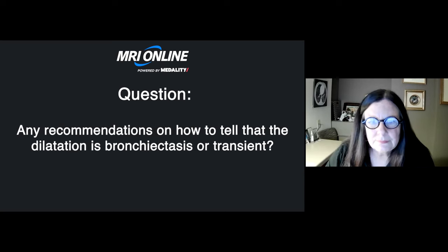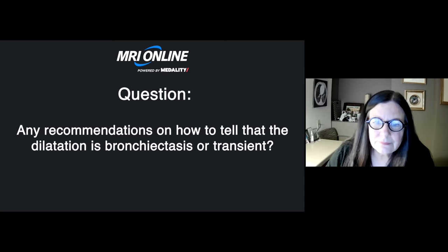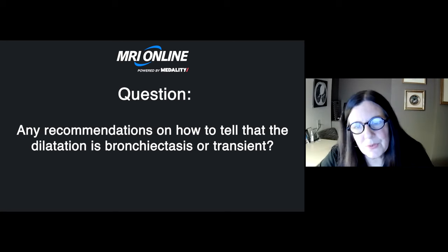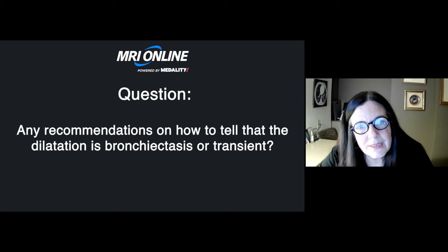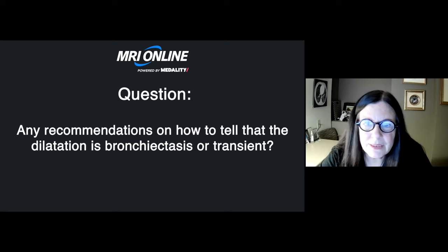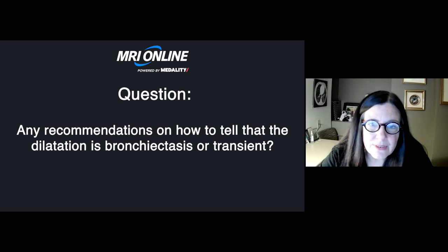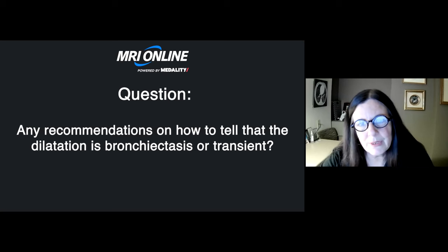I often see reports of bronchiectasis called when, on looking, the dilation is only mild relative to the pulmonary vessel, and often on follow-up the dilation is no longer there. Any recommendations on how to tell if the dilation is bronchiectasis or transient? That's a very good point — otherwise we're going to be over-calling bronchiectasis. The pulmonologist waits until it's 1.5 times the size of the pulmonary artery, but in radiology we say bigger than the pulmonary artery. I would call it bronchiectasis if it's bigger on CT, even if only mildly larger.